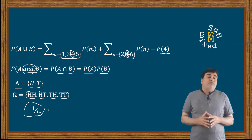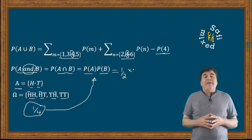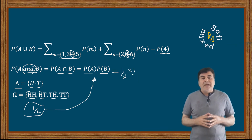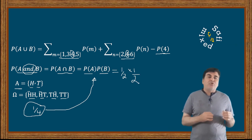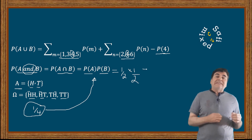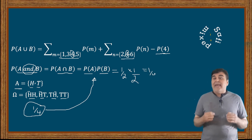Therefore, the joint probability in the case of independent events is obtained as the product of the individual probabilities of the events.